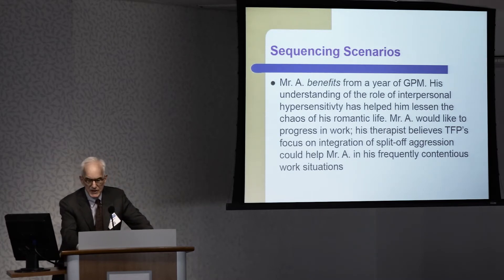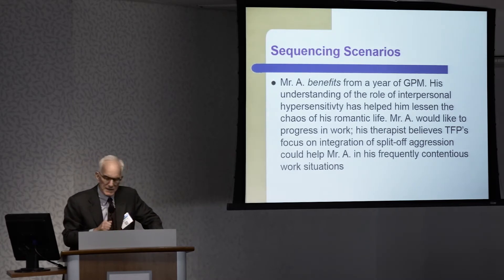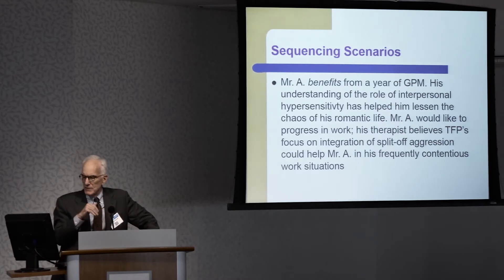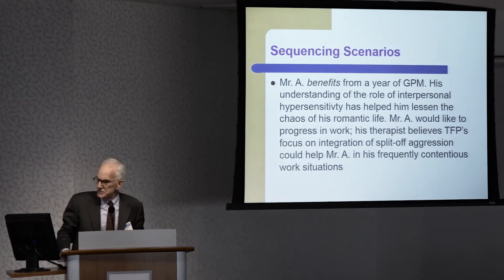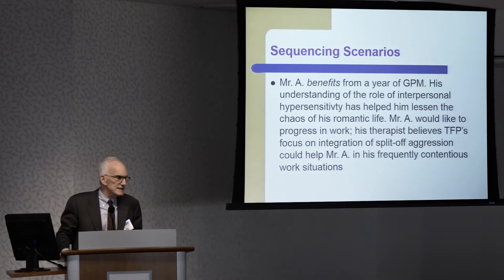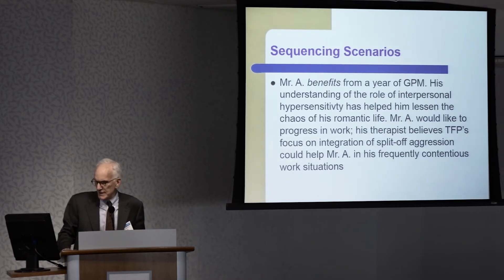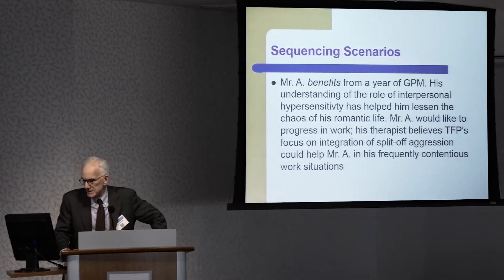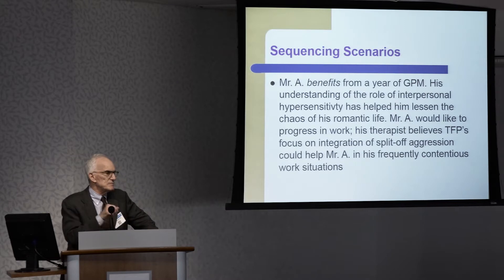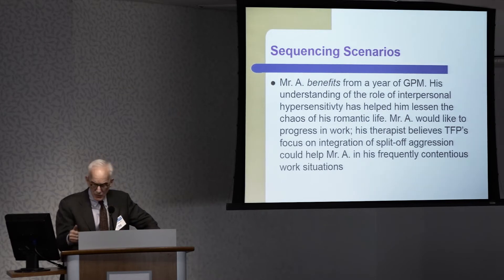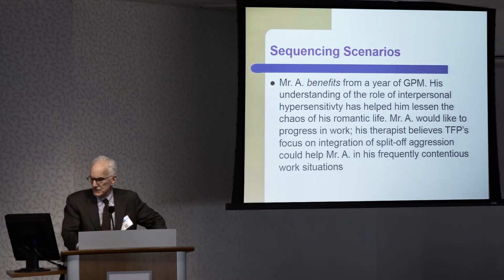In terms of sequencing scenarios: consider Mr. A, who finds he benefits from a year of GPM. His understanding of interpersonal hypersensitivity has helped lessen the chaos of his romantic life, but he'd like to make more progress at work, and his therapist believes TFP's focus on integration of split-off aggression could help in his frequently contentious work situations. Here you'd have a patient referred from GPM to TFP — not because GPM isn't working, but because it has worked and the patient has different goals.